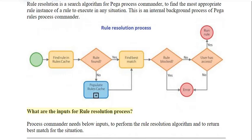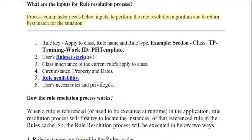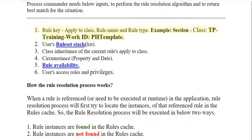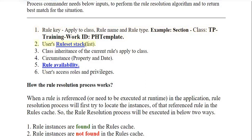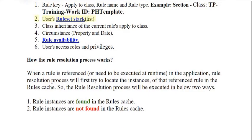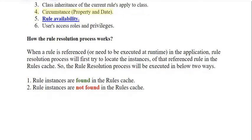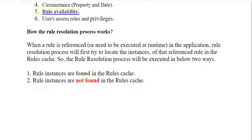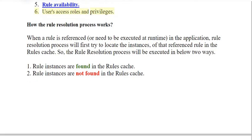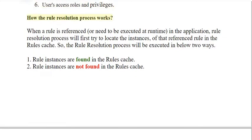What are the inputs for the rule resolution process? Process Commander needs the following inputs to perform the rule resolution algorithm and return the best match for the situation: 1) rule key, apply-to class, rule name, and rule type — for example, section class TP Training Work ID, pH template; 2) user's rule set stack list; 3) class inheritance of the current rule's apply-to class; 4) circumstance property and date; 5) rule availability; 6) user's access roles and privileges.